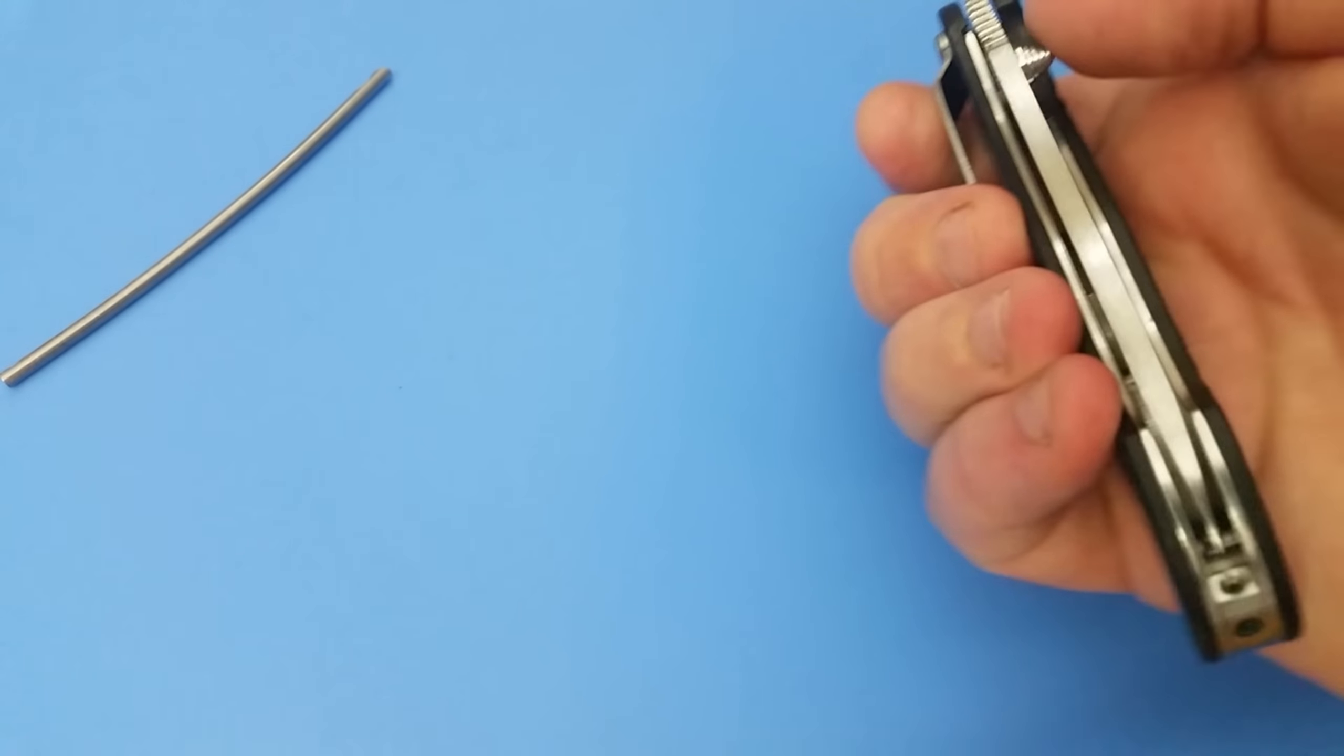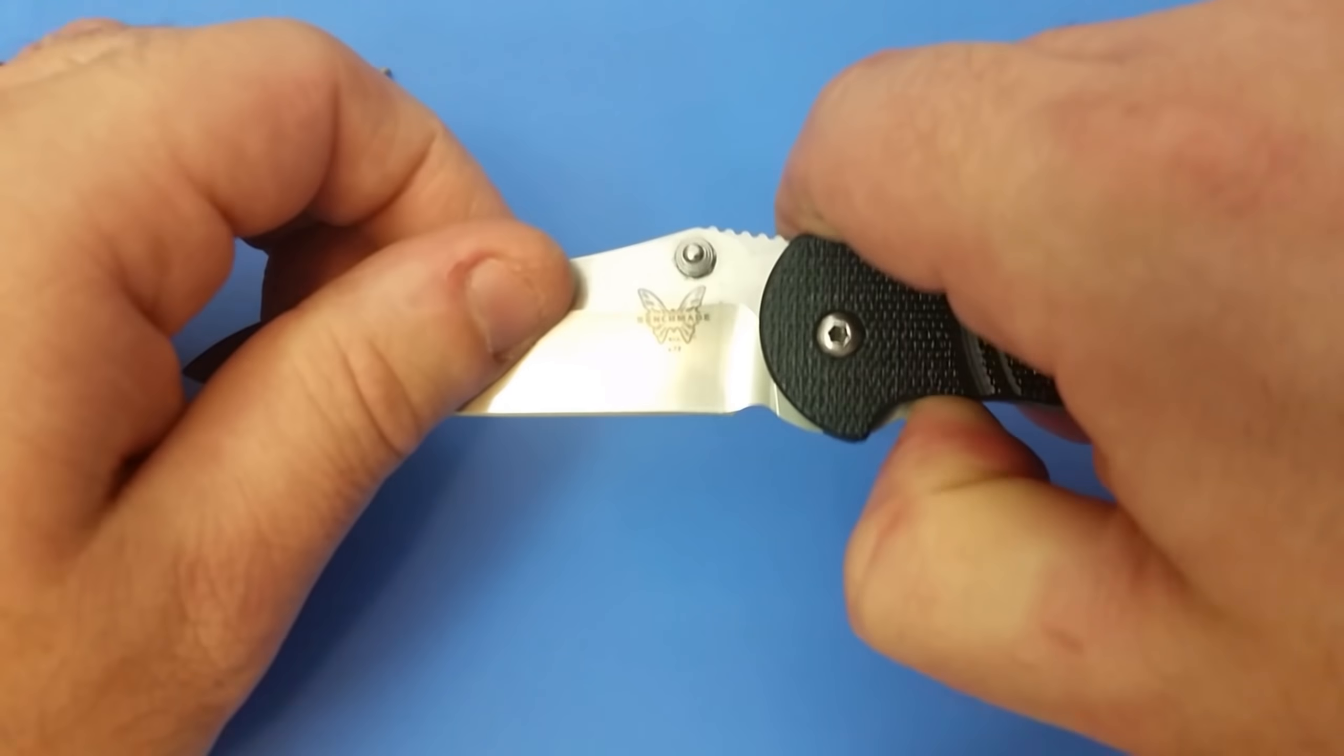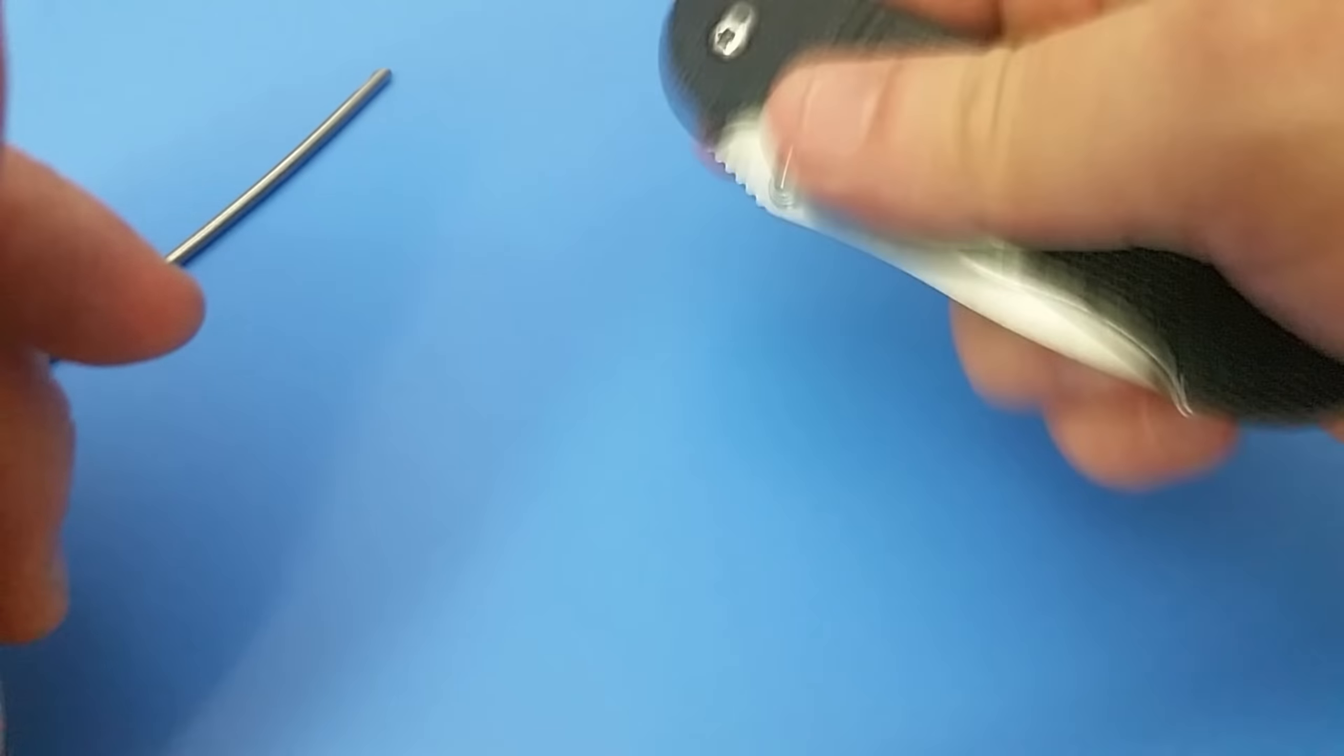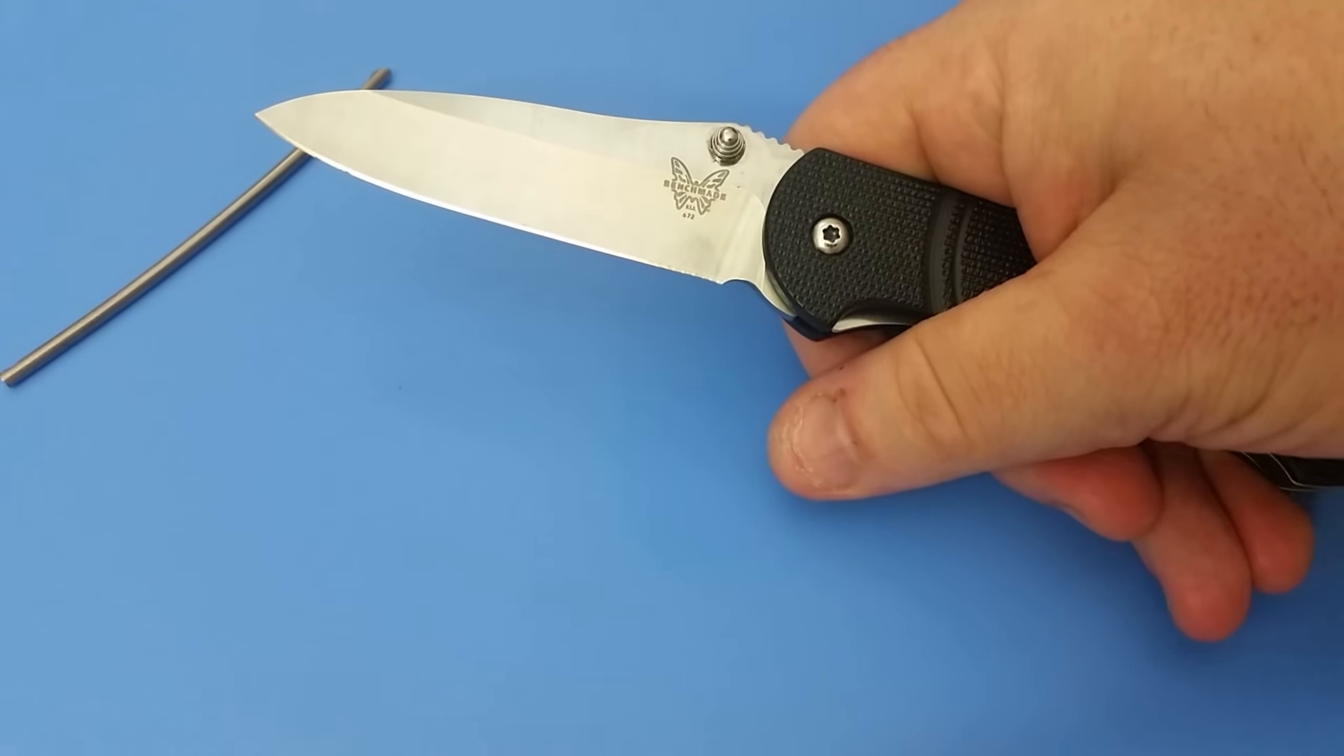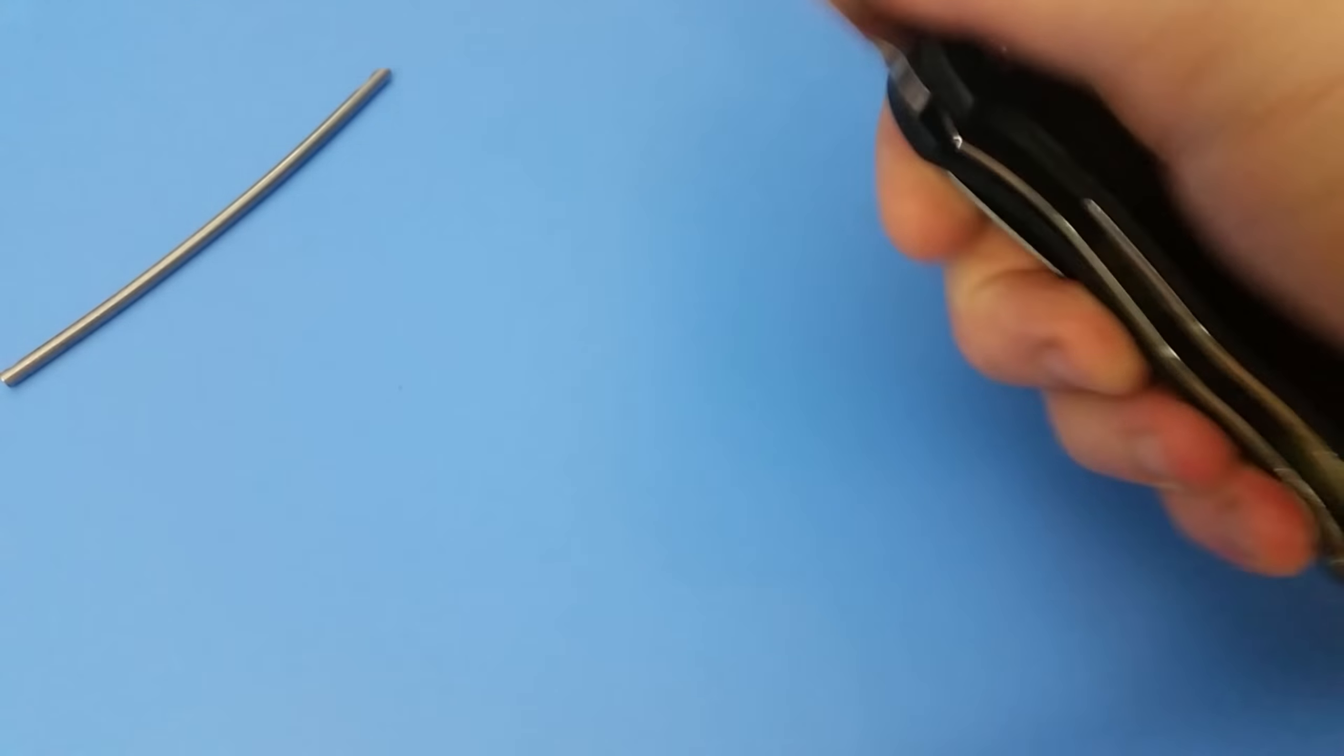Flicks open real nicely with the thumb stud. Centering is still great. Lockup is perfect. The only somewhat negative is that the detent isn't great. Now it's not like shaking out. I'm sure if I shook hard enough it would. But if you like a manual knife, it's still super super smooth. Yeah, and really easy to do.